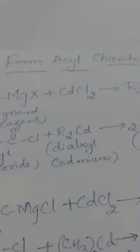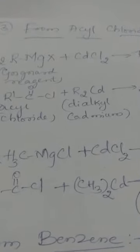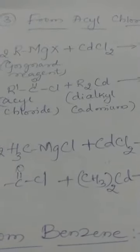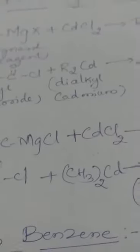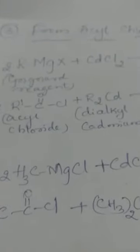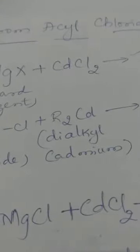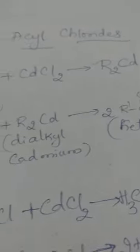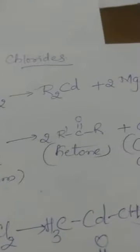The next method of preparation is from acyl chloride. The RCO group is called the acyl group. Acyl chloride reacts with a reagent called dialkyl cadmium (R2Cd). Dialkyl cadmium is obtained by taking Grignard reagent — alkyl magnesium halide RMgX — which reacts with cadmium chloride CdCl2 to give R2Cd with the elimination of MgXCl.